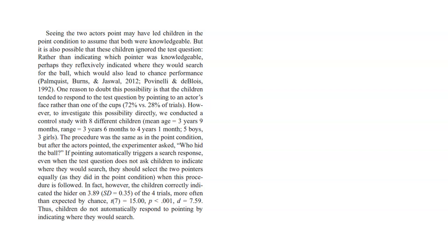'Seeing the two actors point may have led children in the point condition to assume that both were knowledgeable. But it is also possible that these children ignored the test question — rather than indicating which pointer was knowledgeable, perhaps they reflexively indicated where they would search for the ball, which would also lead to chance performance.' Maybe the children were just trying to figure out where they would search for the ball and weren't actually answering 'who knows where the ball is' — they were just filling in a different question.